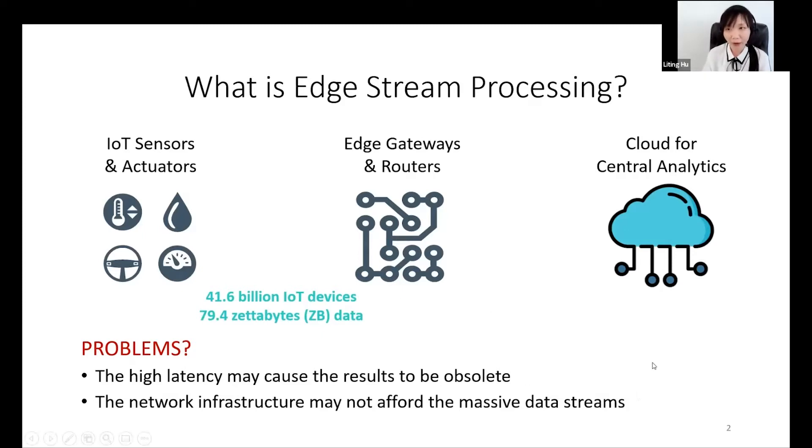However, today most IoT applications adopt the server-client architecture. The IoT sensors transfer data using edge gateways and routers and then send it back to the cloud for offline analysis. The long distances between the sensors and the cloud may cause many issues. For example, the high latency may cause results to expire.